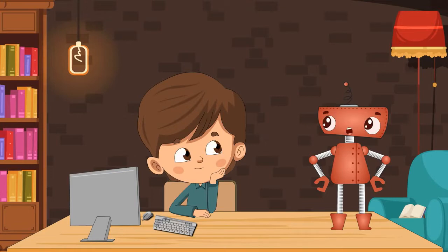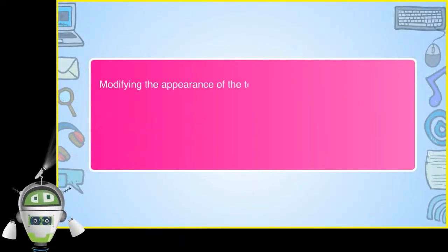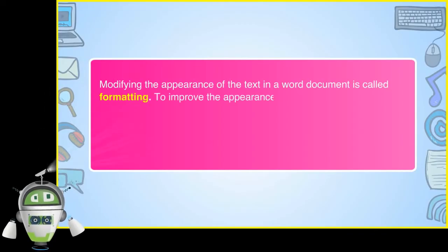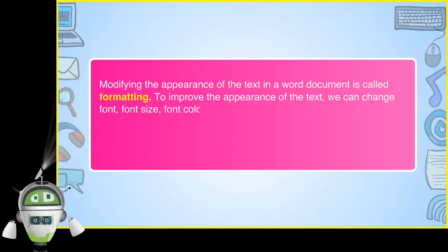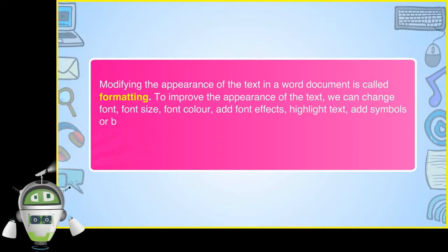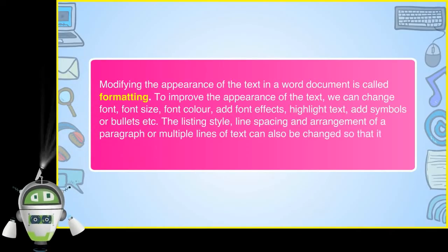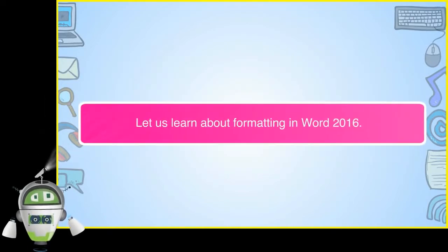Fine, Romy. Let us read this chapter. Modifying the appearance of the text in a Word document is called formatting. To improve the appearance of the text, we can change font, font size, font color, add font effects, highlight text, add symbols or bullets, etc. The listing style, line spacing and arrangement of a paragraph or multiple lines of text can also be changed so that it looks presentable. Let us learn about formatting in Word 2016.